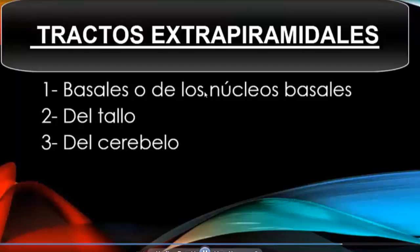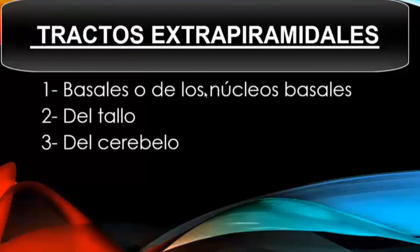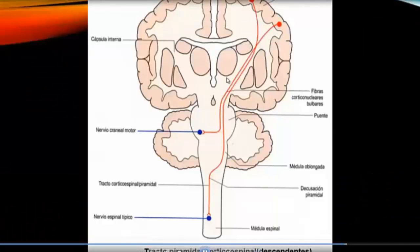These basal nuclei can be the globus pallidus, the putamen, the thalamus. From the brain stem can be the red nucleus, the substantia nigra. From the cerebellum, the cerebellar nuclei.